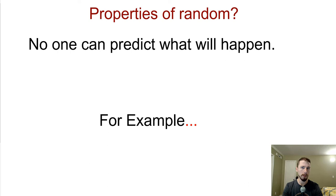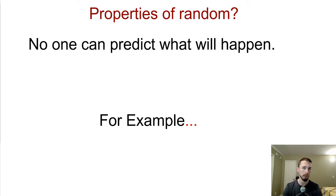So what are the properties of random? The properties of random is that no one can predict — we know what can happen, but no one can predict what actually will happen. Whether it's flipping a coin, rolling a dice, or drawing a card, we don't know what's going to actually happen.